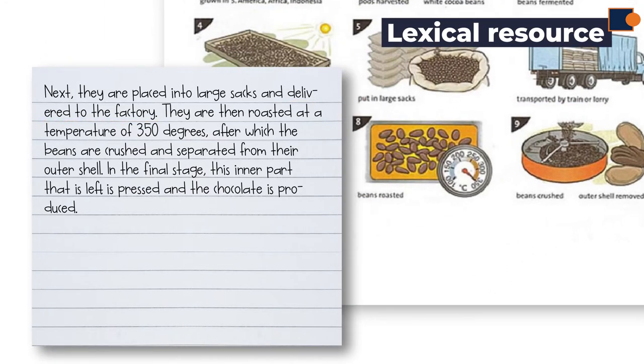Picture 8 shows an oven with roasting beans, showing 350 degrees. The sample is written as 'they are roasted at a temperature of 350 degrees.' So in some cases, you have to describe not only the notes, but also the picture behind the notes as well.